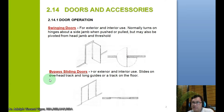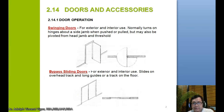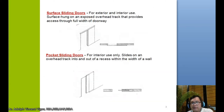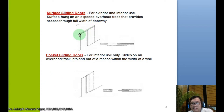We also have bypass sliding doors, which slide on an overhead track and guides or a track on the floor. Then we have surface sliding doors, also for exterior and interior use. The door is surface hung on an exposed overhead track that provides access to the full width of the doorway. Here is the track at the top — when you slide the door you can fully access the opening.